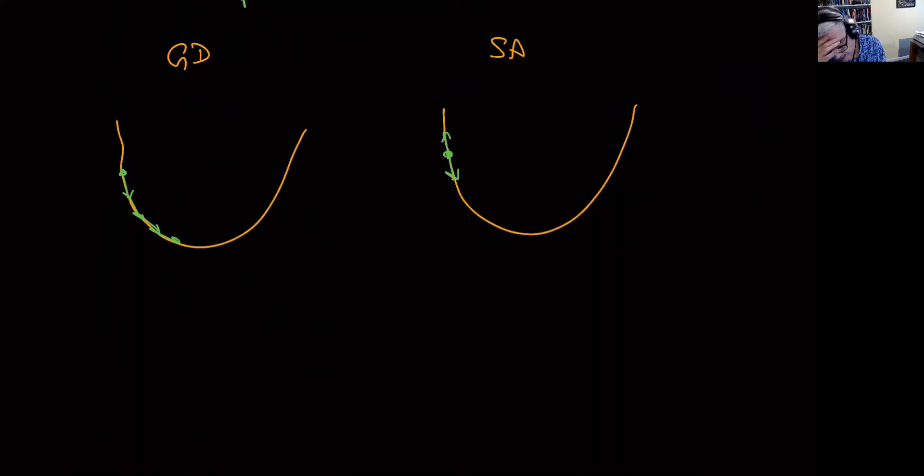And of course, if you're in n-dimensional space, there are many directions one could move in. So that is the essential difference. And the idea is that by being able to move up, I might be able to get out of a local minimum and end up in a global minimum. So you can imagine that if we had a surface like this and I was here, if I use simulated annealing, I might move in that direction. And now I'm in the right minimum to find the global minimum. So that's the main difference between gradient descent and simulated annealing.